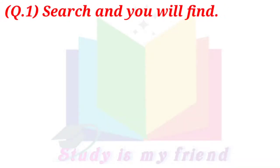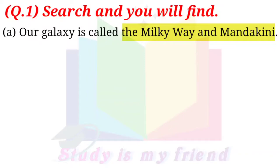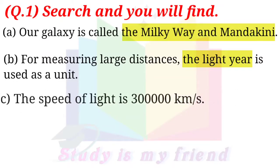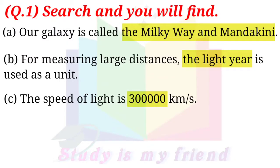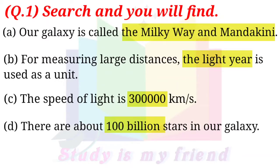Question 1: Search and you will find. A. Our galaxy is called the Milky Way and Mandakini. B. For measuring large distances, the light year is used as a unit. C. The speed of light is 300,000 km per second. D. There are about 100 billion stars in our galaxy.